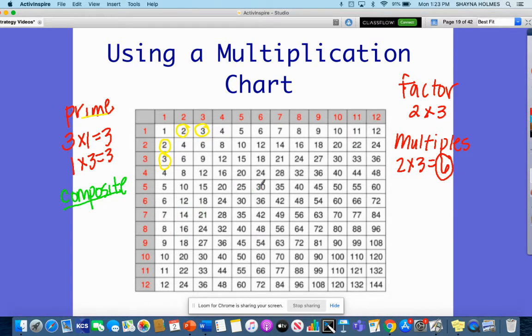Composite numbers mean that they can have multiple factors. A good example is 12. When I look at 12 here, I've got three and four. I also have 12 here, so I have four and three.